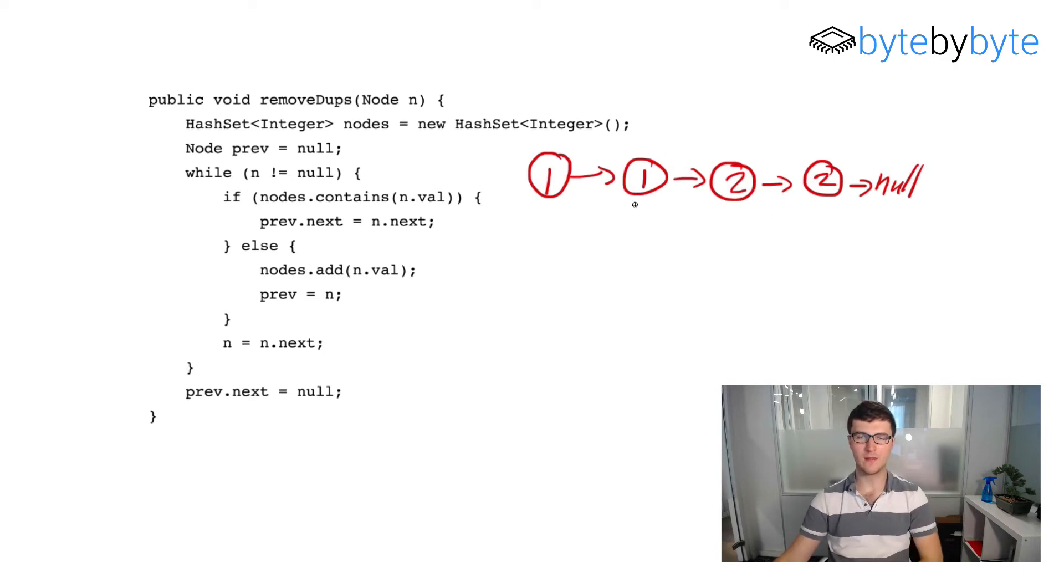So we'll say one, one, two, two like this. So that way we have this is a duplicate here and this is also a duplicate at the end. So our expected output is going to just be a two node list which is going to be one, two pointing to null.